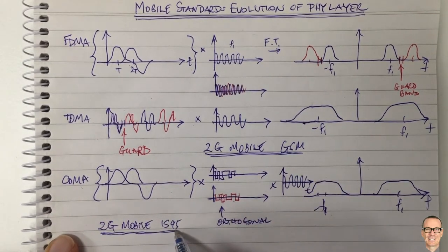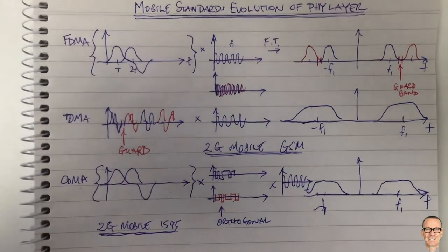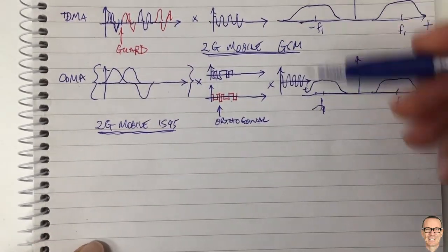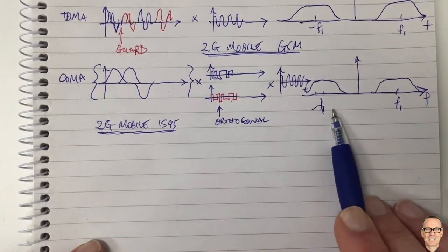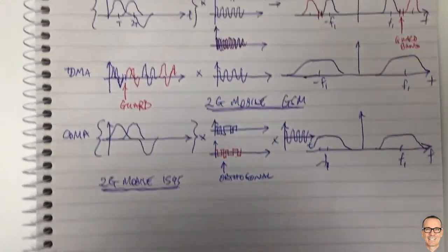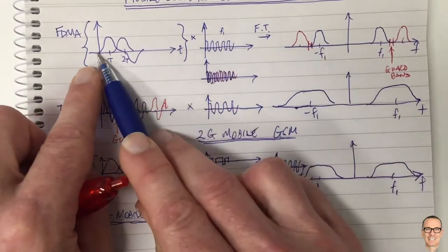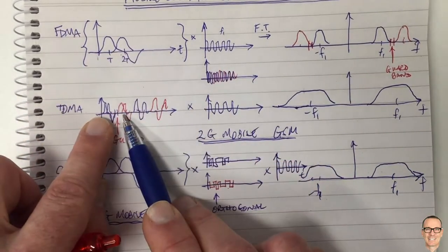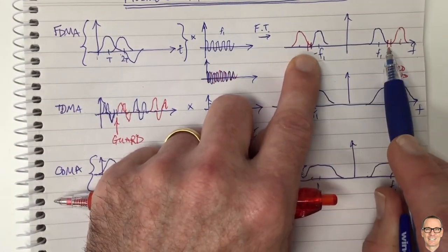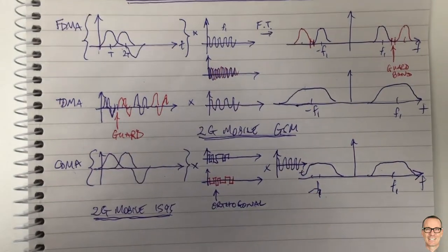Moving to 3G and 4G — what's the modulation format? We still have the challenges of orthogonal codes and equalization. Thinking back to FDMA, equalization was easier because the symbols lasted for a longer period of time. So the question is: can we do something to get rid of the guard band, which was the challenge for FDMA? That's actually what OFDM does.